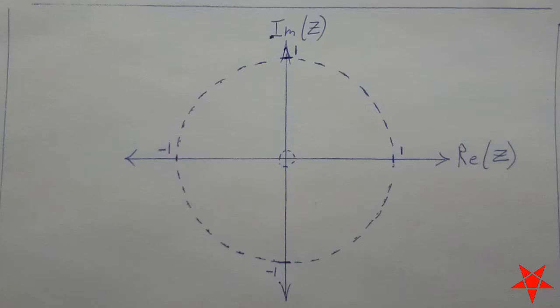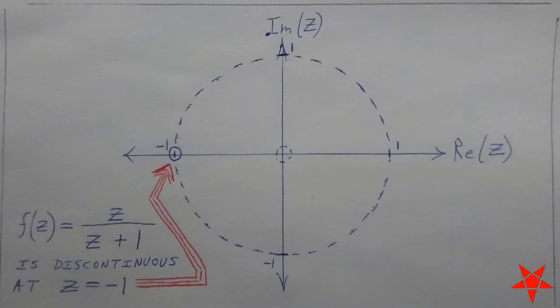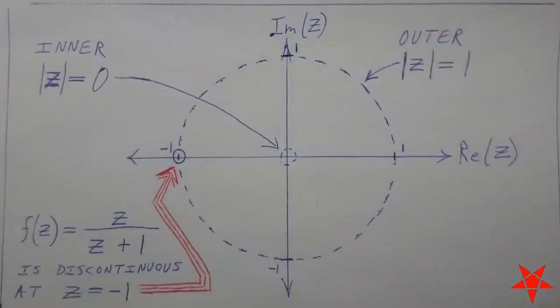Basically it's a disk with a pinprick in the center. We still have a zero in the denominator, which we will avoid because the outer boundary is non-inclusive of that zero, thus avoiding the offending value of z equal to negative 1.